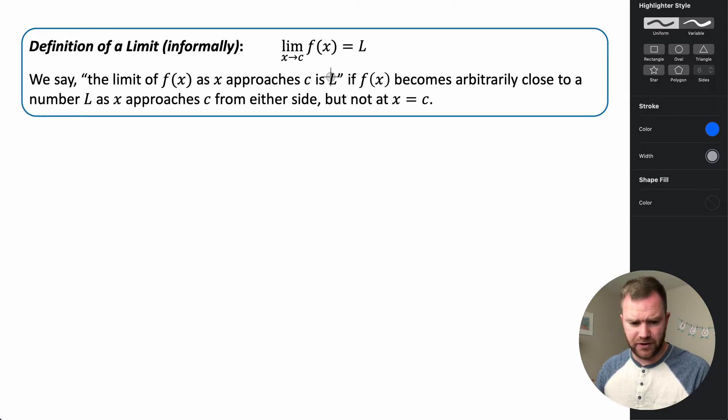So this is an informal definition of a limit. The way that we read this is: the limit of f(x) as x approaches c is L. If f(x) becomes arbitrarily close to some number L as x approaches c from either side, but not at x equals c.